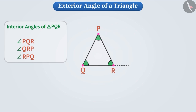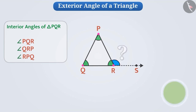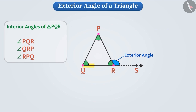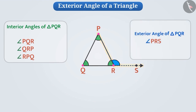When we extend one side of the triangle — here, side QR is extended to S — then we get an angle. Since it is an angle located in the exterior of the triangle, we will call it the exterior angle of the triangle. We have extended side QR through point S, giving us angle PRS, which is an exterior angle of triangle PQR formed at vertex R.